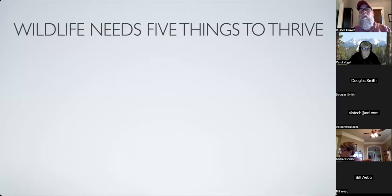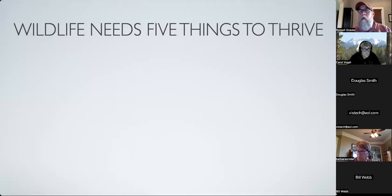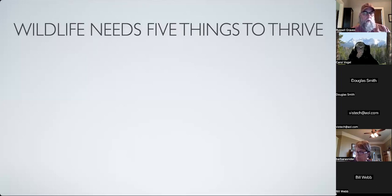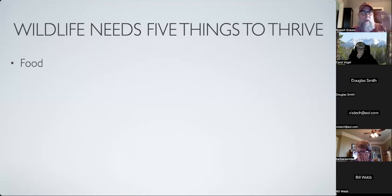One important thing to know about wildlife is every species - including us - needs five primary things to survive. Once you understand these things it becomes easier to attract birds, bugs, big mammals, or whatever you're trying to photograph. It also becomes easier to find them when you're in the field.